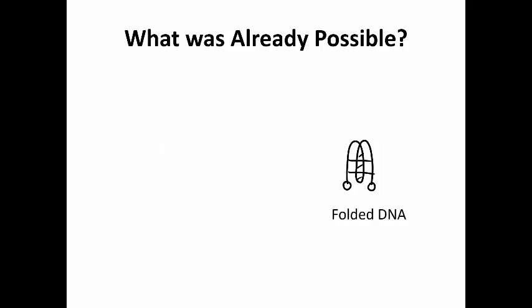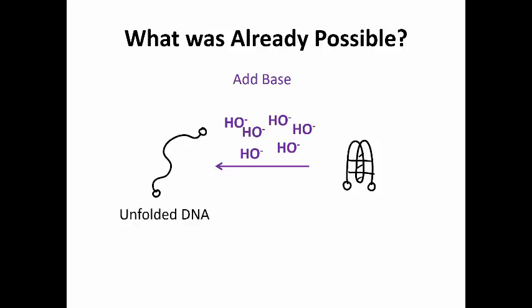We can also unfold it. To do this, we need to get rid of all of the acids, so we need to add something to neutralize it, which we call a base or alkali. We add the base, and then we get the DNA unfolded again.